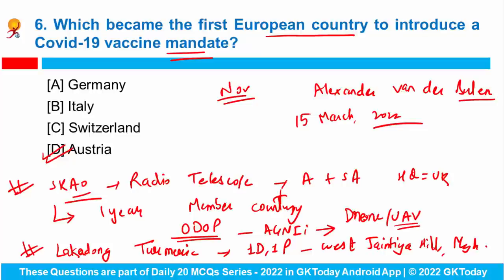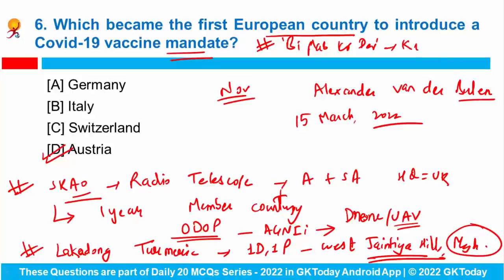West Jaintia Hills, from where Lekadong Turmeric is exported, is located in Meghalaya. Also, Tripura Chief Minister Biplab Kumar Dev laid the foundation stone for Kamalpur-Kurma Ghat border haat between India and Bangladesh, in the district named Dhalai, which is expected to boost trade relations between the two countries.